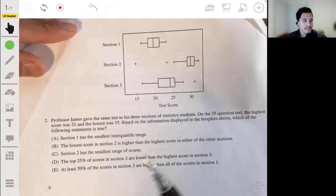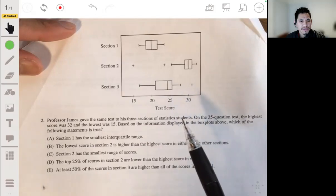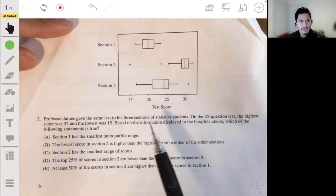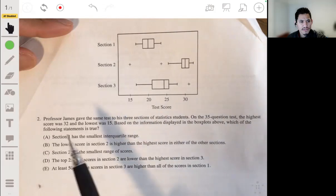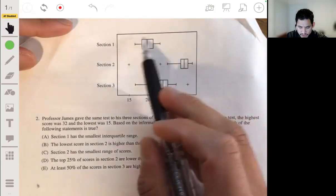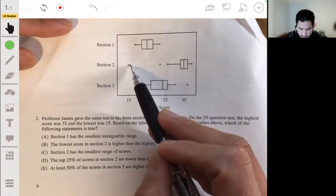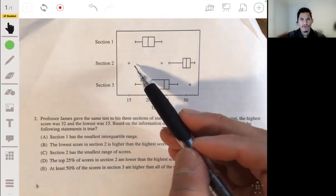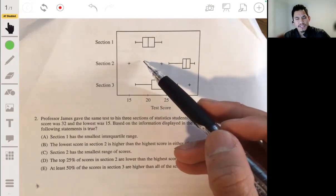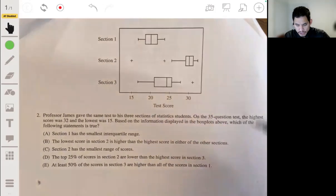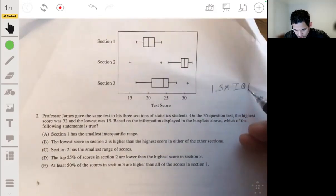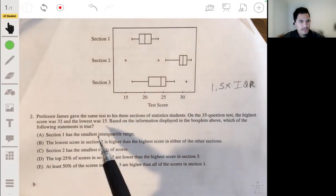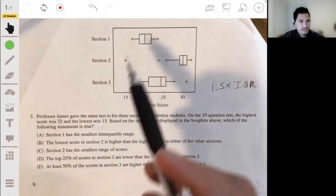All right, number two. Professor James gave the same test to his three sections of stats students. On the 35 question test, the highest score was 32 and the lowest was 15. Based on the information displayed in the box plot above, which of the following statements is true? Okay, so we have section one, section two, and section three. These, remember, are outliers. Usually a computer will print them out according to some formula. If they lie usually more than 1.5 standard deviation or 1.5 IQR units, 1.5 times IQR units below Q1 or above Q3, they'll usually mark it with like an asterisk or in this case pluses. So which of these would be true?